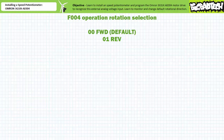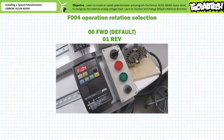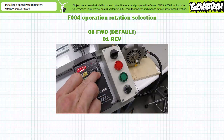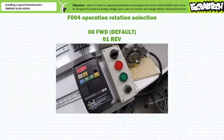Now let's see if we can change the default rotation direction without rewiring the motor. Basic function parameter F004, operation rotation selection, has two available options: 00, the default setting, is forward; 01 is reverse. Navigate to parameter F004, operation rotation selection. Select mode, increment from the default 00 selection to 01 reverse, then select enter to save it. This motor drive has now been programmed to roll in reverse.